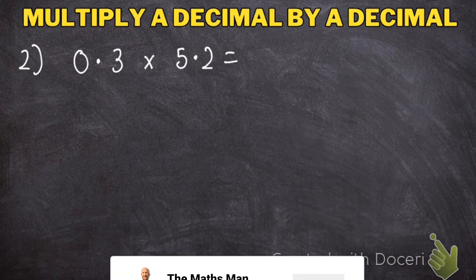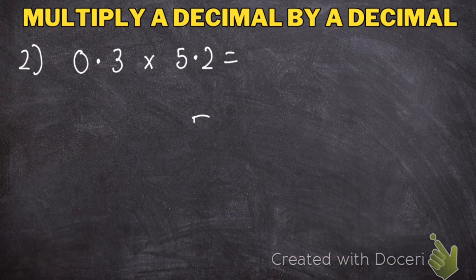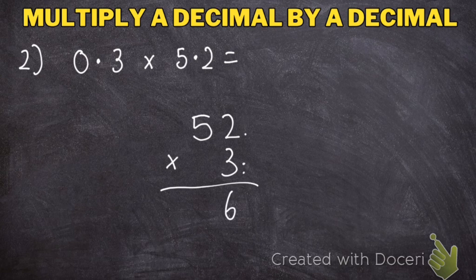In this example, we have 0.3 multiplied by 5.2. As before, I'm going to pretend the decimal point isn't there and do 52 multiplied by 3. 3 times 2 makes 6. 3 times 5 makes 15.